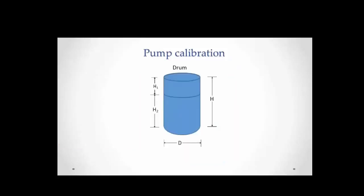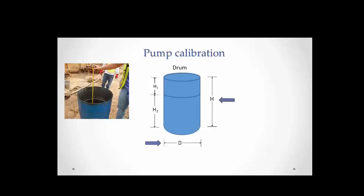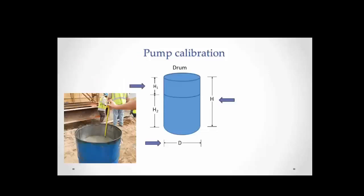Here is a sketch that shows the dimensions we need to determine for the test. We measure the inside diameter D, the total height of the barrel H, which is measured from the inside, and at the end of the stroke, we measure the free distance between the height of the grout and the top of the barrel.